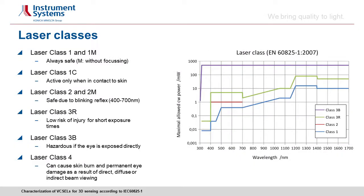Laser classes indicate the potential harmfulness of your system. Laser class 1 is always safe — it may be used by non-trained personnel and kids in public domains. On the other hand, laser class 4 is extremely dangerous, not only to the human eye but also to the skin, potentially causing burns. Damages from class 4 are not only due to direct beam viewing but also from indirect reflections and diffuse scattering. The bottom line: if you want to use a laser in public, it must be laser class 1.